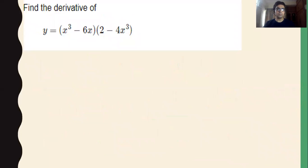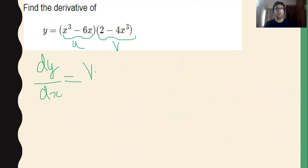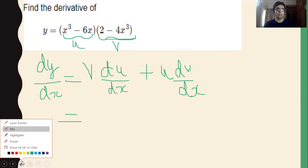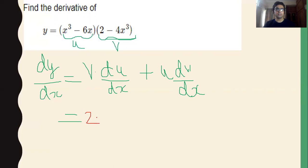Consider one more example. This is a similar example. Treat one function as u and the other as v. Apply the product rule: dy/dx = v · (du/dx) + u · (dv/dx). Put the value of v as it is. Here v = 2 minus 4x³, and calculate du/dx.